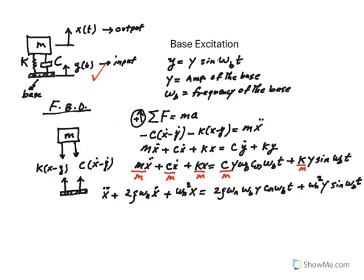Omega b is the frequency of the base, just like the driving frequency in a way. Uppercase Y is the amplitude of the base. What we are trying to find is the output, how much the mass is going to move, but again we are only interested in the steady state solution.